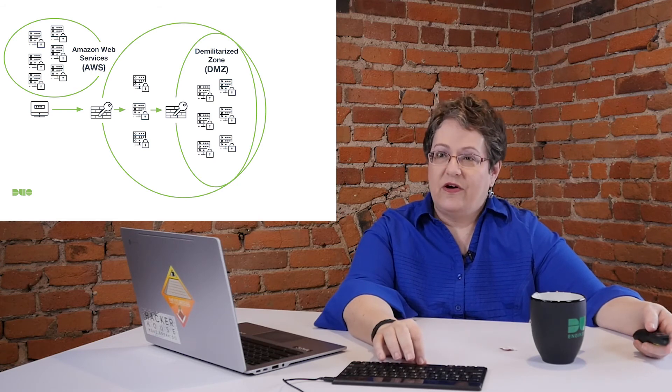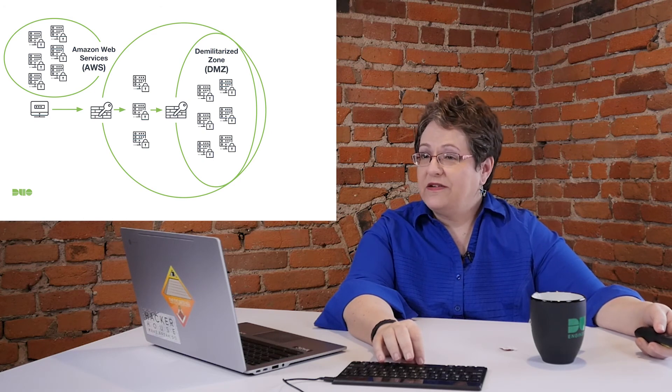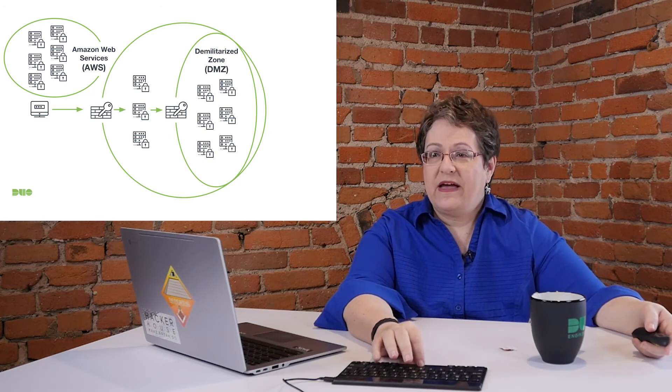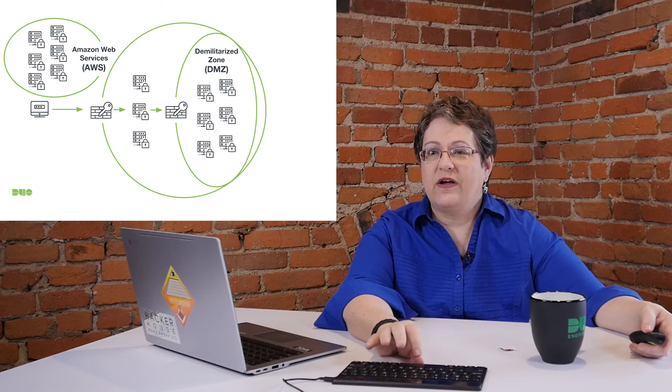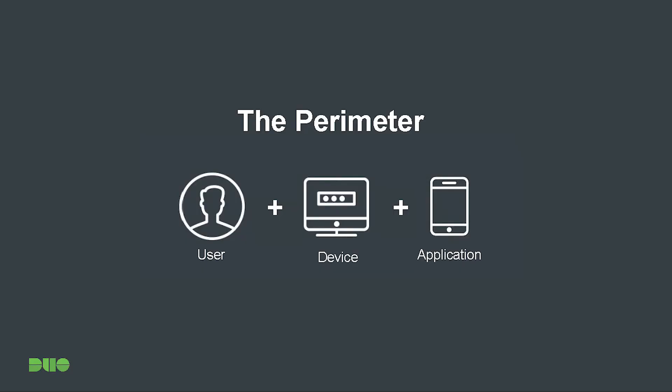But the perimeter can also be in front of the application where you log in, and that's what Duo Access and Duo Beyond do. So even if you got past the firewalls, or even if you're talking to an application outside the firewalls, you're still going to have to get past the Duo guard. The perimeter is made up of the user, plus the device, plus the application. All of the decisions are being made with those three items, not considering the network. And that's why Duo's different.